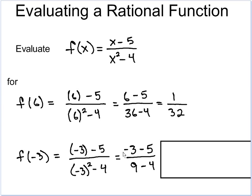When we get rid of our parentheses, we end up with negative 3 minus 5. And on the bottom, there's that 9 minus 4. Then we subtract. So, negative 3 minus 5 is negative 8. 9 minus 4 is 5. And you get another simple fraction at the end. That's the end of our lesson on evaluating rational functions and what is a rational function.